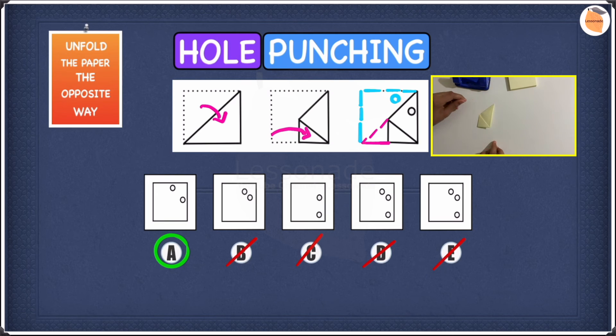And once we've done that, we've done both of the folds. All we have to do is to punch. So let's punch right here at the top right. And after punching it, we've got a hole right here.